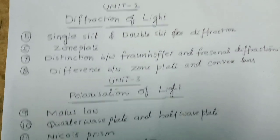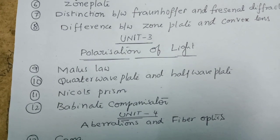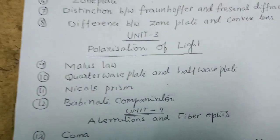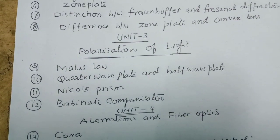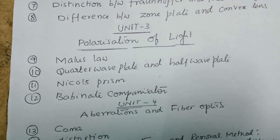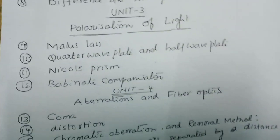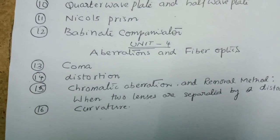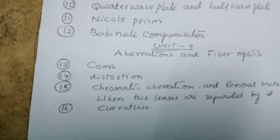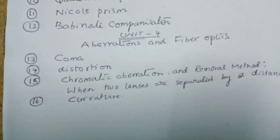Unit 3 Polarization of Light: Malus's law, quarter wave plate and half wave plate, Nicol's prism, Babinet compensator. The next question is chromatic aberration and removal methods when two lenses are separated by a distance.